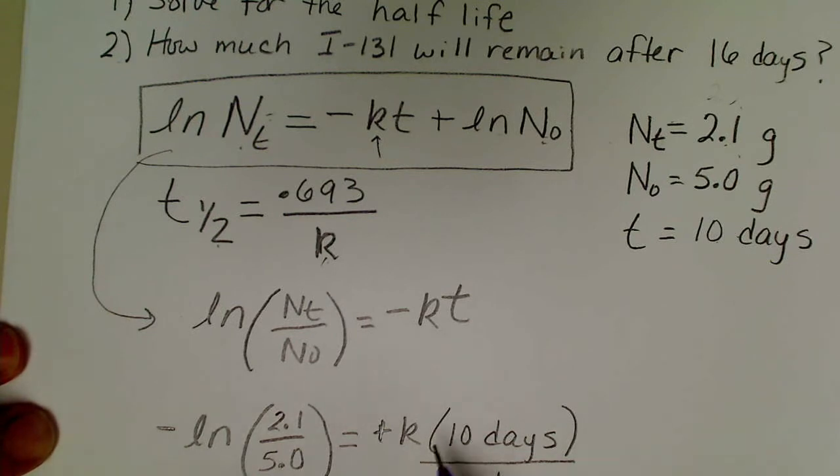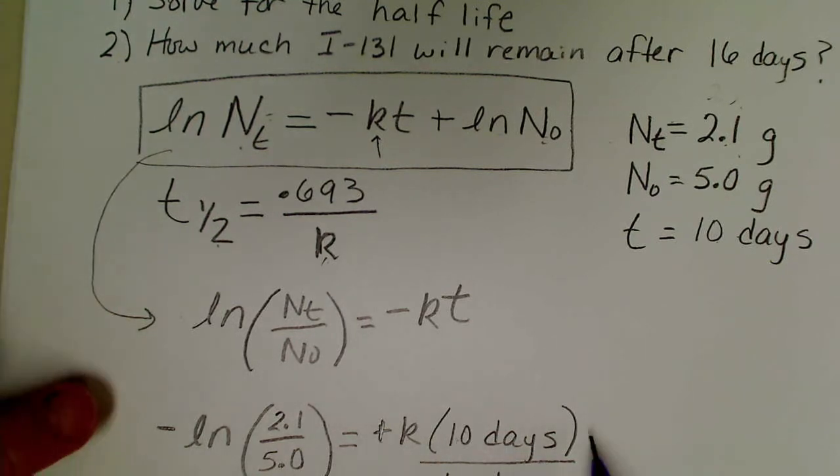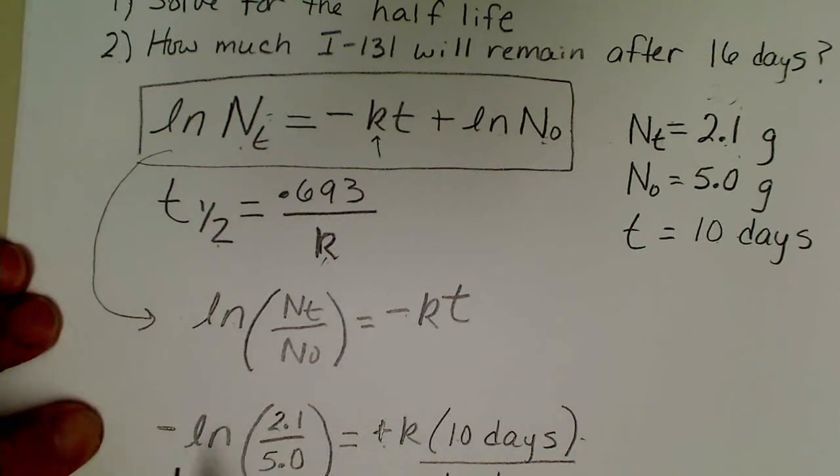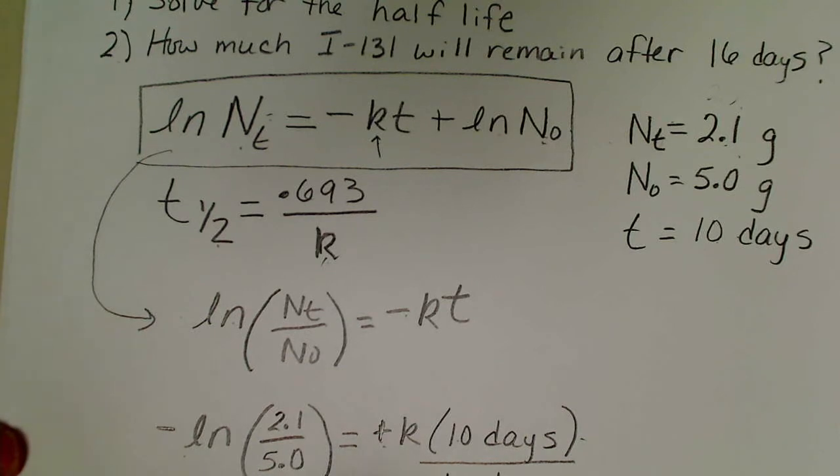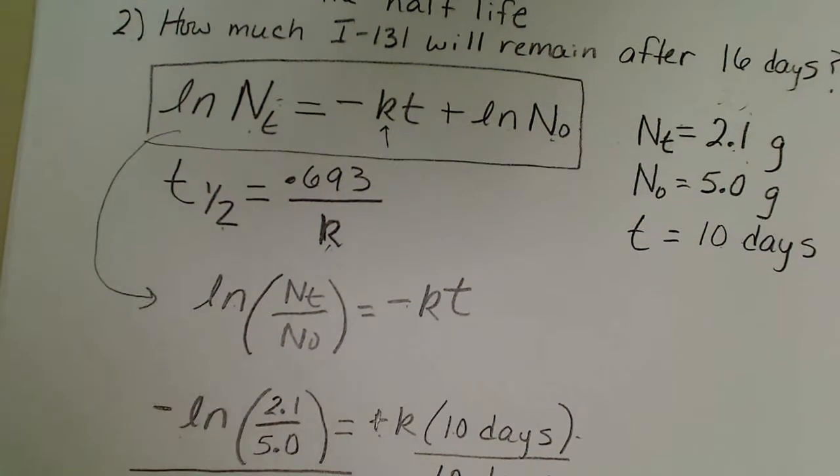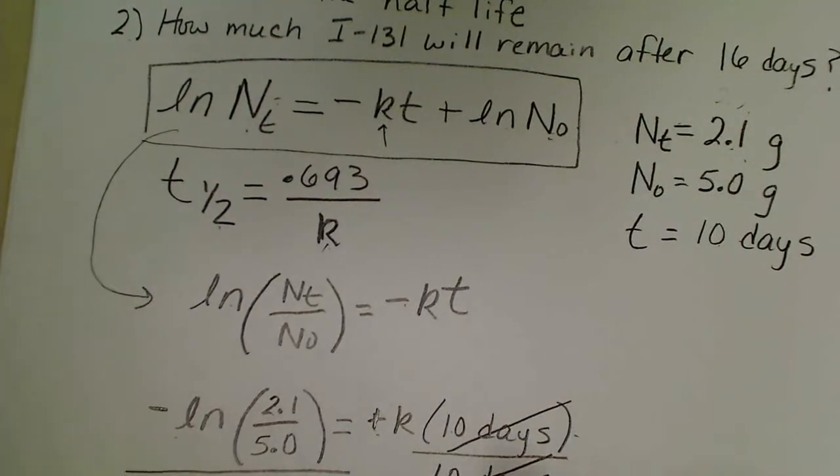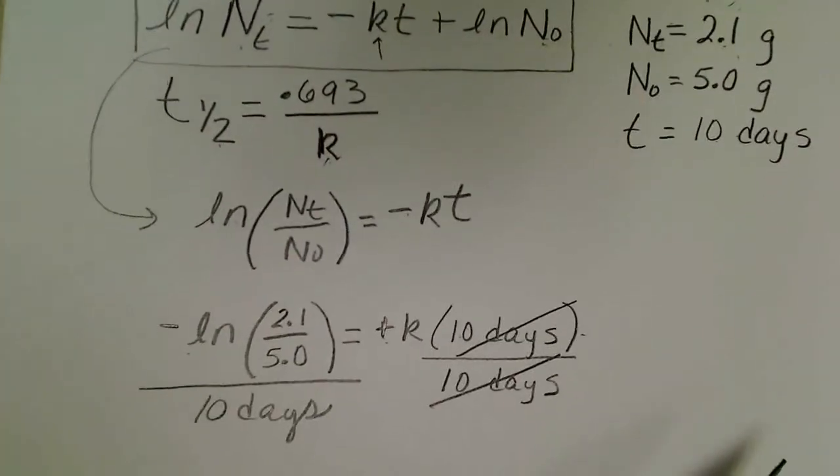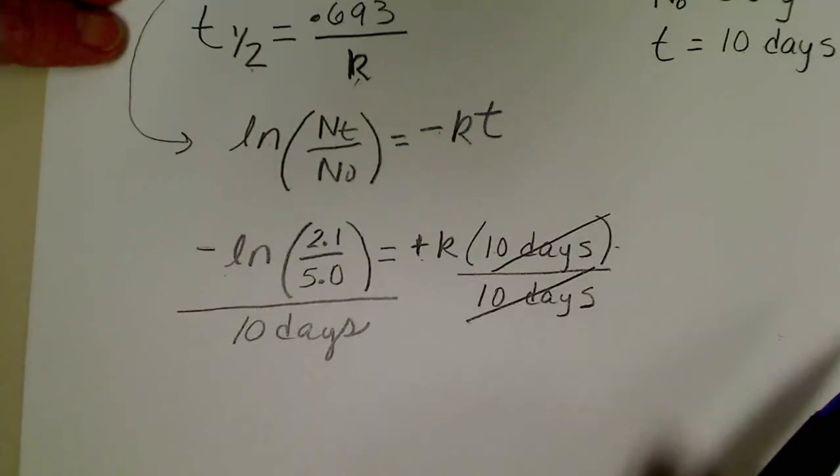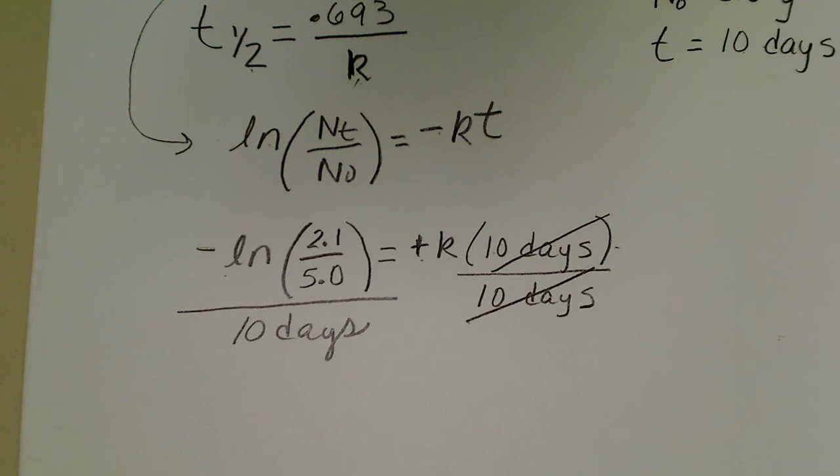Algebraically I multiplied both sides by negative one, so my negative kt became positive and my positive natural log became negative. Now I found my calculator so I should be able to do this without doubting the calculations.